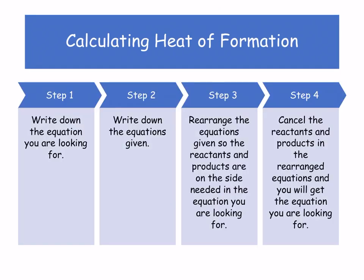Number one: you write down the equation that you're looking for — in this case, the formation of methane. Then you write down what equations were given and you rearrange them, flipping them if needed. Make sure that the products are on the side you need and the reactants are on the side you need. Then you cancel off the products and reactants in the rearranged equation, and that will give you what you want. I'll go through an example to make that easier to understand.